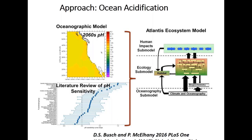The approach for thinking about ocean acidification in the California Current used three pieces of the puzzle. First, a ROMS oceanographic model projecting 2060s pH and other ocean conditions compared to 2010s — work of Al Hermann at PMEL. Second, a detailed literature review of over 300 studies published by Shallon Bush and Paul McElhaney in 2016 — a meta-analysis estimating the relative sensitivity of species in the California Current to declines in pH. Third, the Atlantis ecosystem model, which includes oceanography, biogeochemistry, ecology including food web interactions, and human impacts especially fisheries.